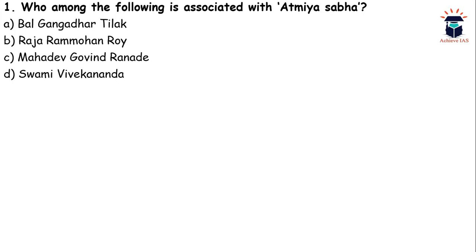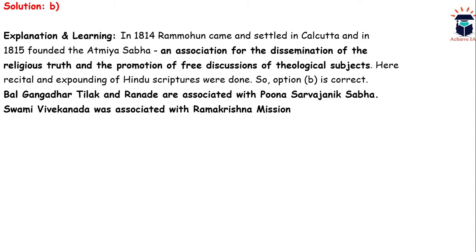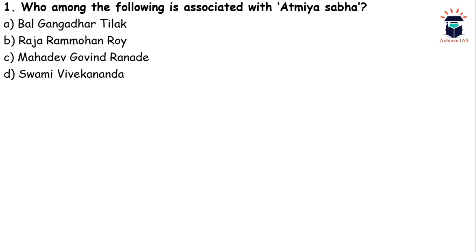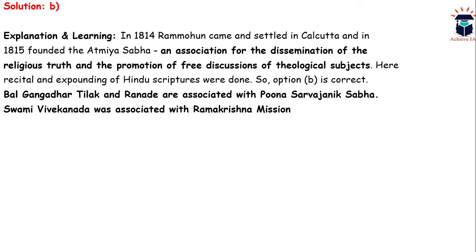Raja Ram Mohan Roy founded Atmiya Sabha in 1815 after settling in Calcutta. It was an association for the dissemination of religious truth and the promotion of theological subjects, where recital and expounding of Hindu scriptures were done. Bal Gangadhar Tilak and Mahadev Govind Ranade were associated with Poona Sarvajanik Sabha, and Swami Vivekananda was associated with Ramakrishna Mission.